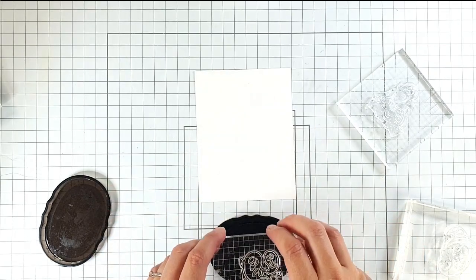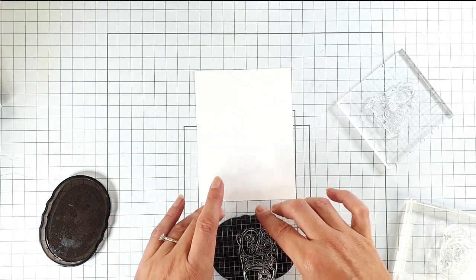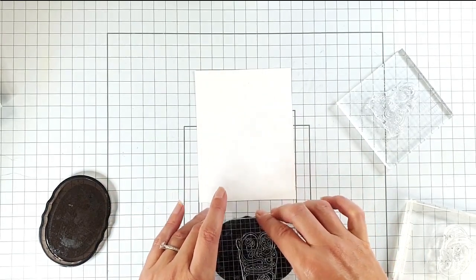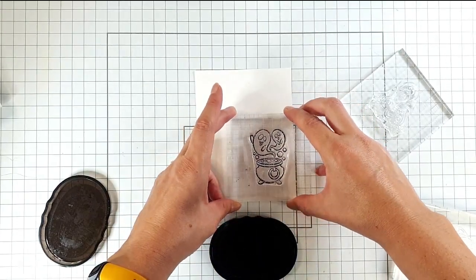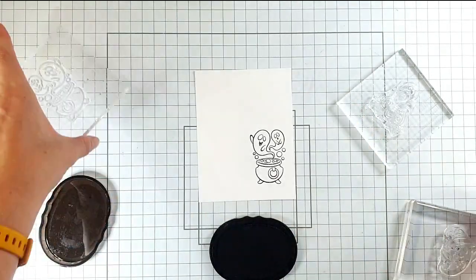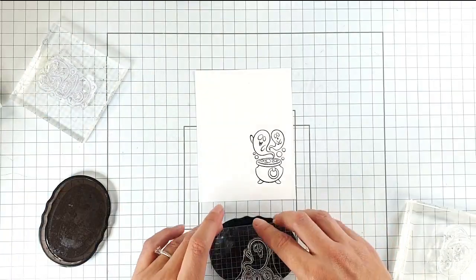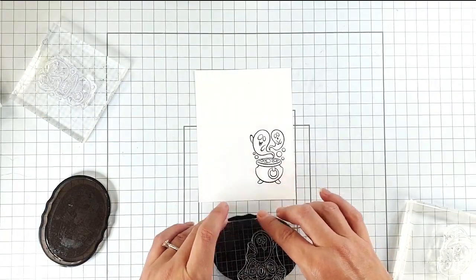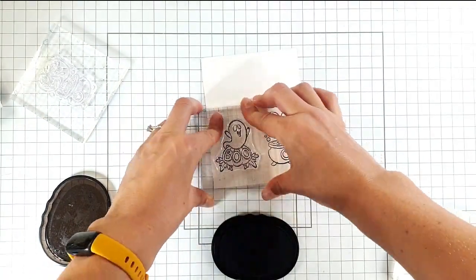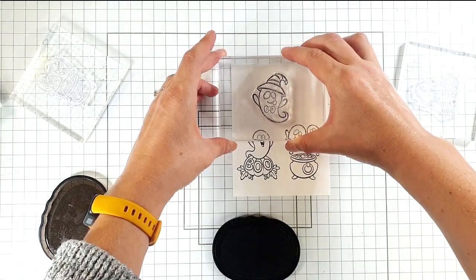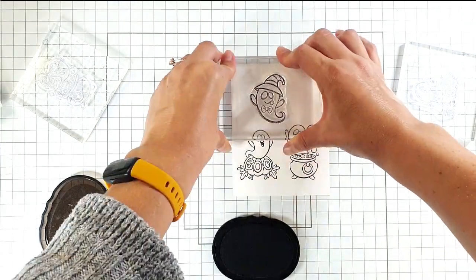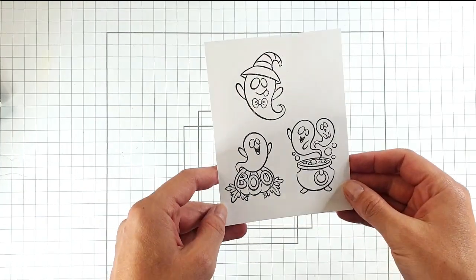So I've got just a four and a quarter by five and a half inch white piece of cardstock and I'm just going to stamp on a fun little ghost scene. I'm going to pop that one down there and then I'm going to have the little boo, and I think it'd be fun to have this one up here as well. So those are placeholders for our ghosts.